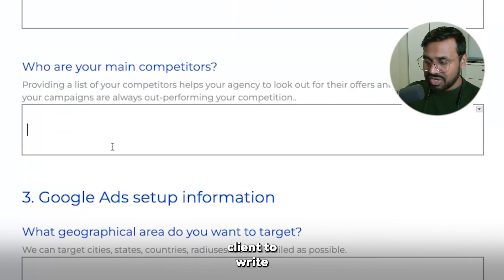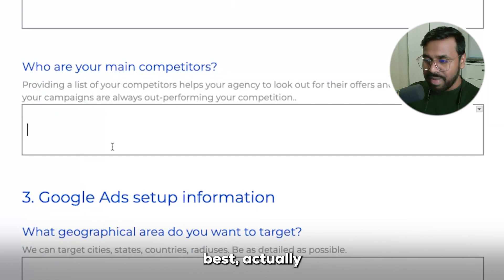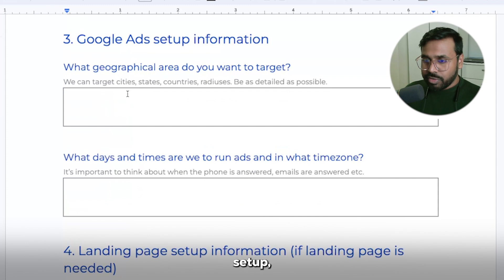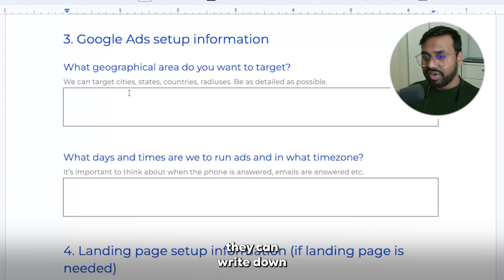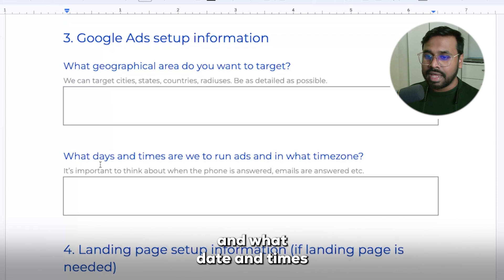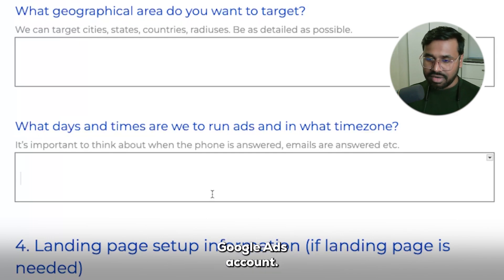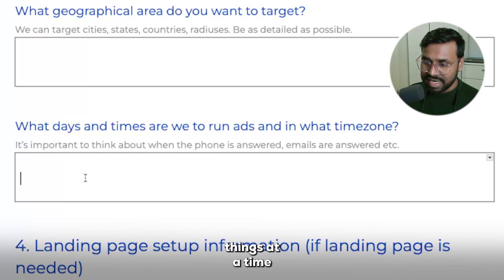Always ask your client to write at least three to five main competitors in their market, because your clients know best who the local competitors are. Under Google Ads setup information, you can see the geographical area they want to target — they can write down the city name, state, country, or radius, whatever suits them best. Also ask what dates and times they want to run Google Ads and in what time zone, since we always add a schedule under the Google Ads account.